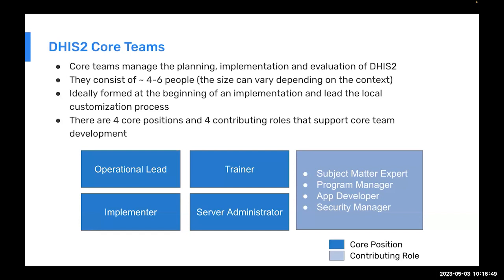The size of the team can vary — they can consist of roughly four to six people. The size of the implementation might affect this: if you're a country of 300 million like Indonesia, you might need more than six people. If you're a smaller country, you might not even have the ability to fill four positions. Generally speaking, we have at least four specific roles to fill. We also have four extra roles that provide input into the core team from time to time — not needed every day, but their input is needed quite frequently.